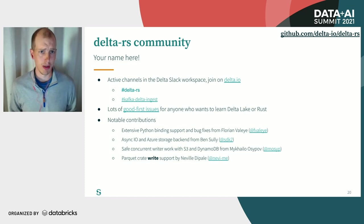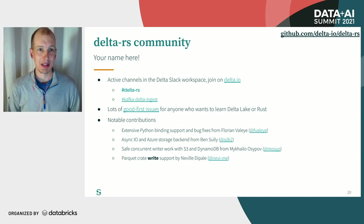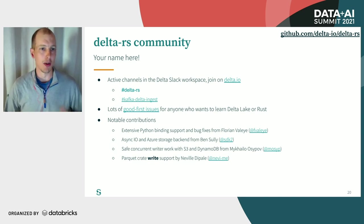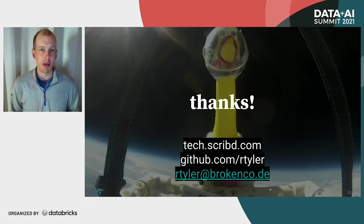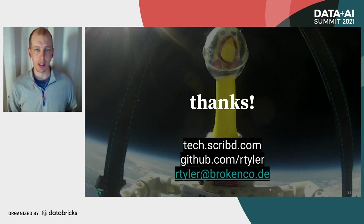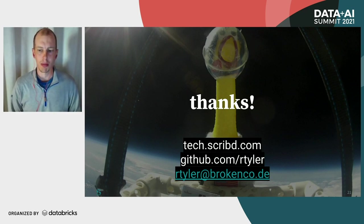I encourage you to check out Delta RS — the GitHub link is there. pip install delta-lake or cargo install delta-lake, either will work fine. If you're interested in contributing, I would love to see Golang bindings or Node bindings so that we can grow Delta Lake outside of the JVM ecosystem and really spread it as far as we can. If you want to learn more about what Scribd is doing with Rust or Delta Lake, check out tech.scribd.com. You can also find me on GitHub or via email if you've got any follow-up questions. Thanks.